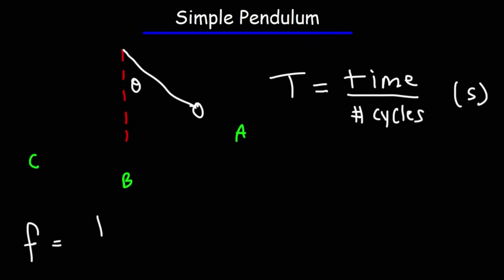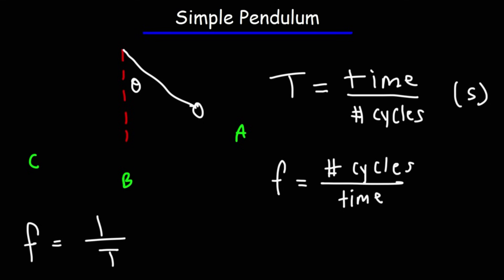The frequency is the reciprocal of the period. To calculate the frequency, take the number of cycles and divide by the time. The unit of frequency is the reciprocal of the second — equivalently, Hertz. The period is the time it takes to make one complete cycle, whereas the frequency is the number of cycles that occur in one second. Make sure you write these formulas down because you'll use them in practice problems.